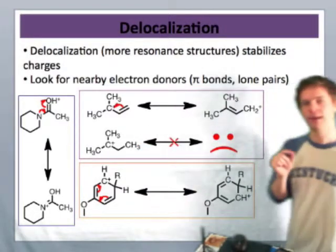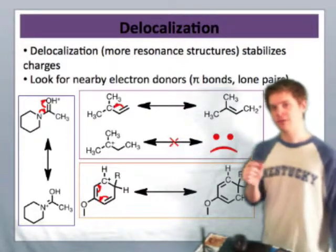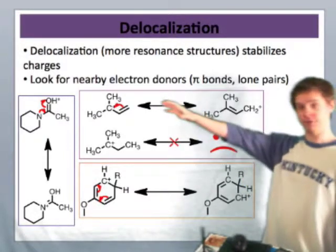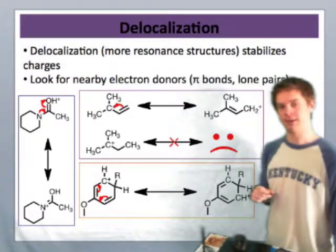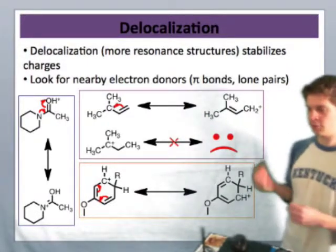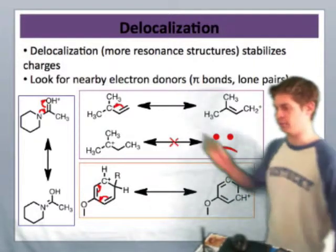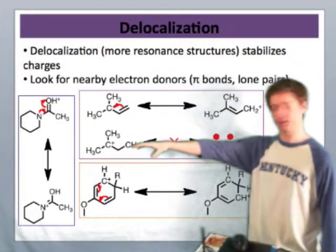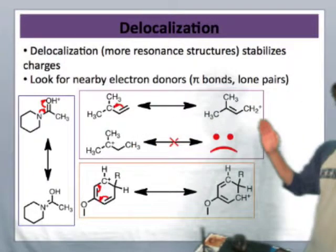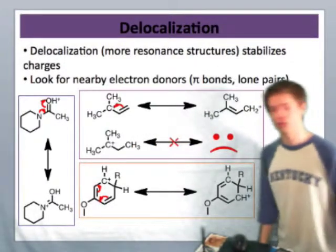However, if we introduce an electron donor adjacent to the positive charge — in the top case, we've done that by the introduction of a pi bond — we're now in a situation where the positive charge is delocalized over two atoms: the central atom that is positively charged, but also the terminal carbon, as this resonant structure on the left-hand side shows.